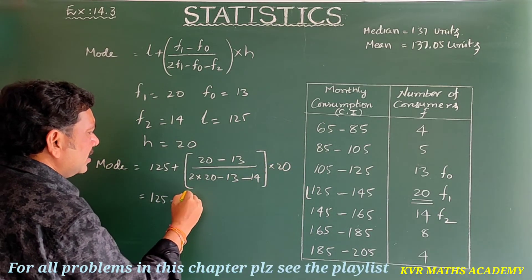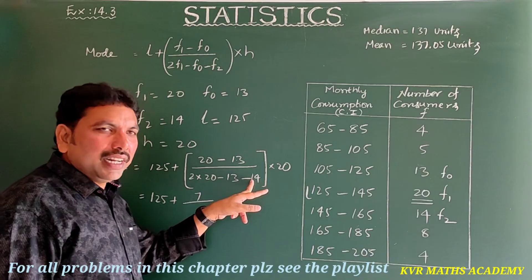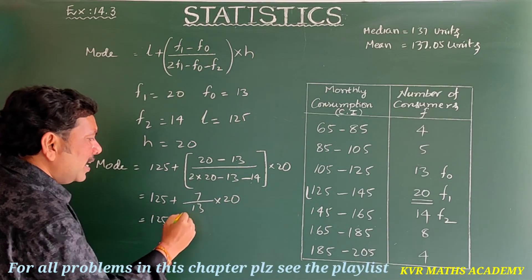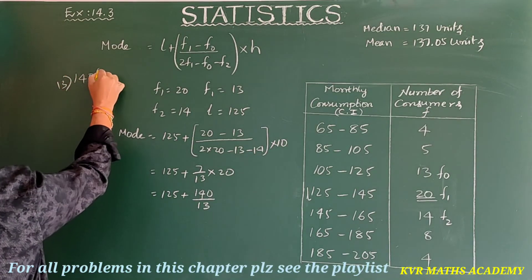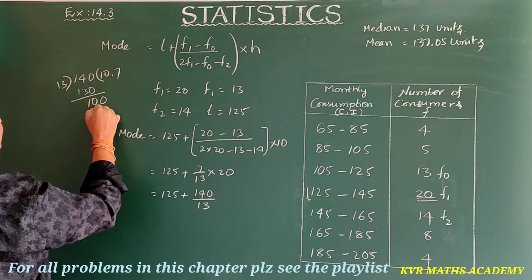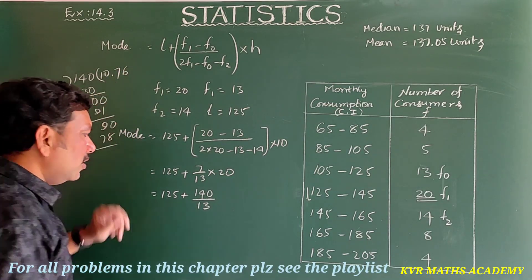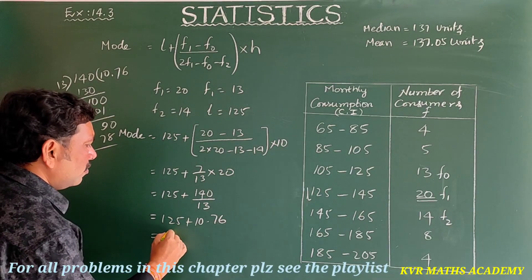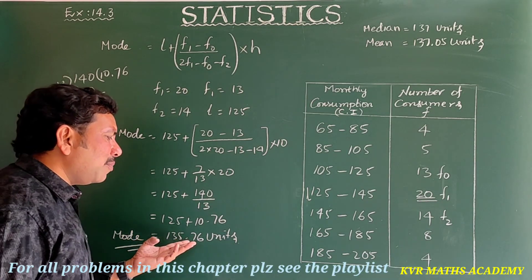Calculating: 7 × 20 = 140, so Mode = 125 + 140/13. Dividing 140 by 13: 13×10 = 130, remainder 10; putting decimal, 100/13 gives 7 (13×7=91), remainder 9; next gives approximately 0.76. So 140/13 ≈ 10.76. Mode = 125 + 10.76 = 135.76 units.